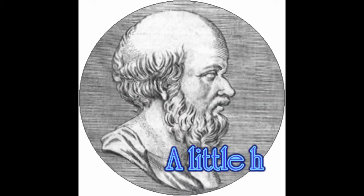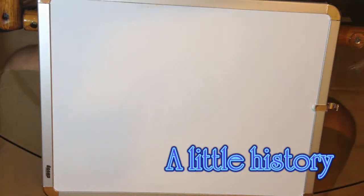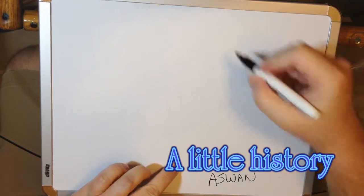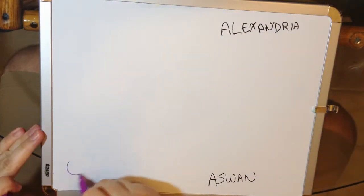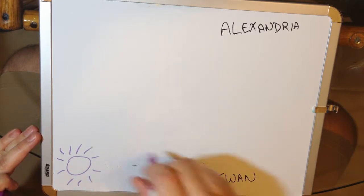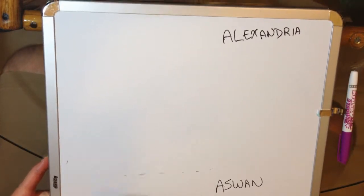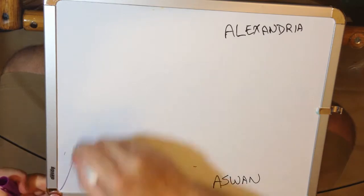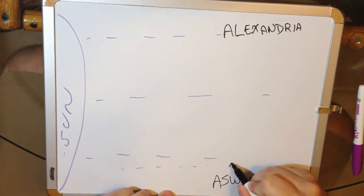Let's start today with the father of geography, Eratosthenes, a Greek scholar from Cyrene, which is now called Libya, who discovered a curious eyewitness report in the library of Alexandria. He read that on the longest day of the year in the southern Egyptian city of Syene, which we now call Aswan, that at noon the Sun cast no shadow even in the deepest of wells.